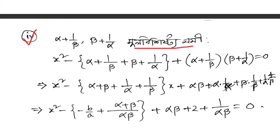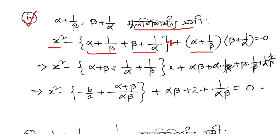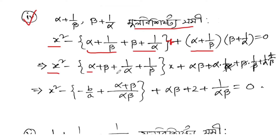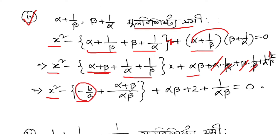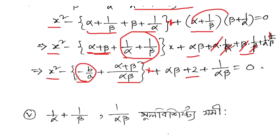The next problem: roots are alpha plus 1 by beta, and beta plus 1 by alpha. The sum is (alpha plus 1 by beta) plus (beta plus 1 by alpha) which equals alpha plus beta plus 1 by alpha plus 1 by beta. The product is (alpha plus 1 by beta)(beta plus 1 by alpha) equals alpha beta plus 1 plus 1 plus 1 by alpha beta. Substituting alpha plus beta equals minus b by a and alpha beta equals c by a.